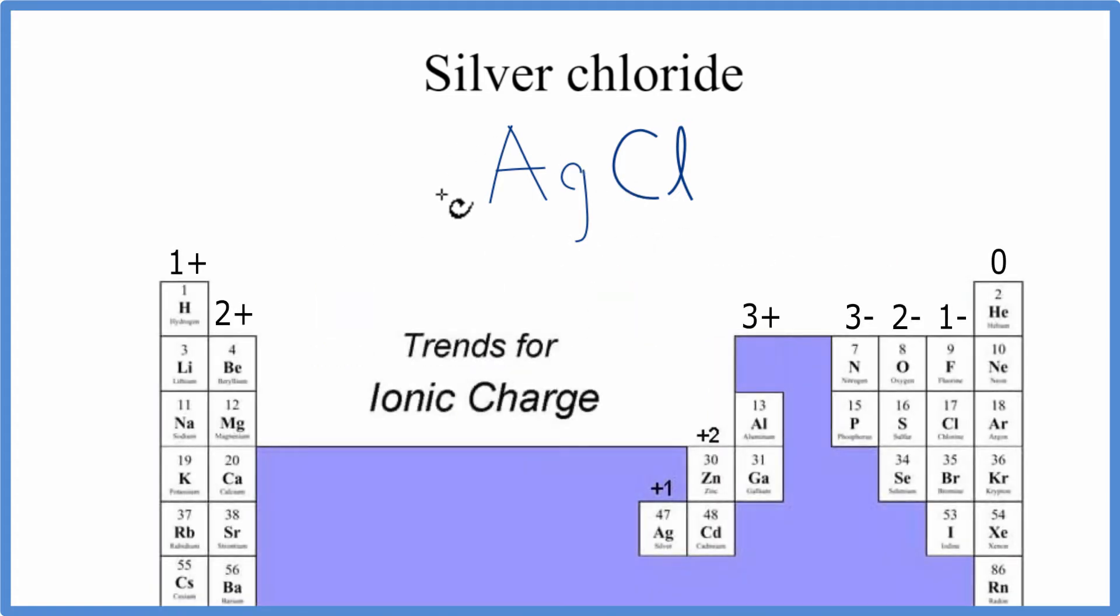So we go to the periodic table. Silver is a transition metal, but it's a bit of an exception. It always has the same charge. That's 1+.